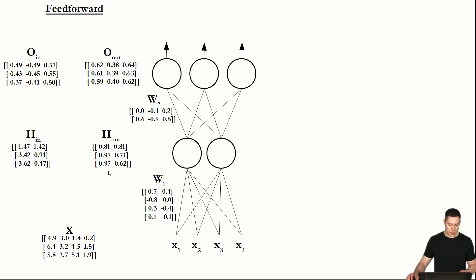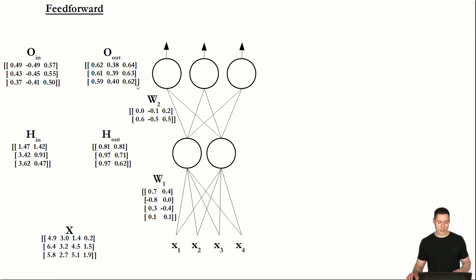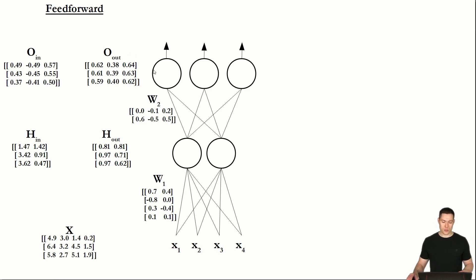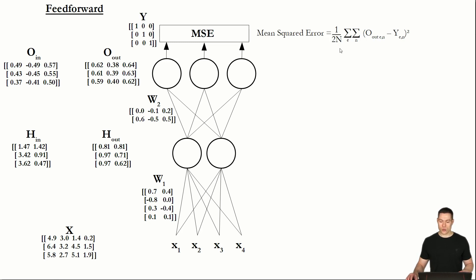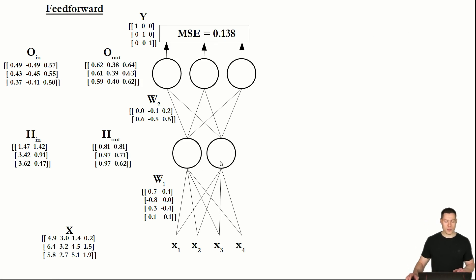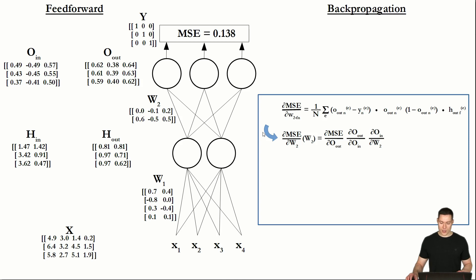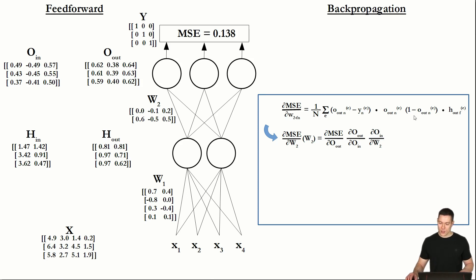This is the feed-forward algorithm. To see how well the neural net is currently making predictions, we put the output layer outputs together with the labels into our mean squared error function, which gives us a mean squared error of 0.138. Now we need to understand how we can determine the partial derivative of the mean squared error with respect to weight matrix 2 during back propagation, and how we can transfer that to dealing with matrices.